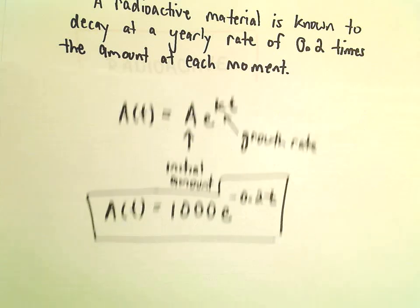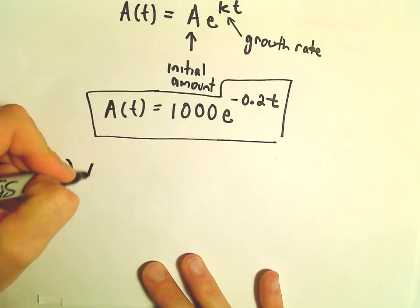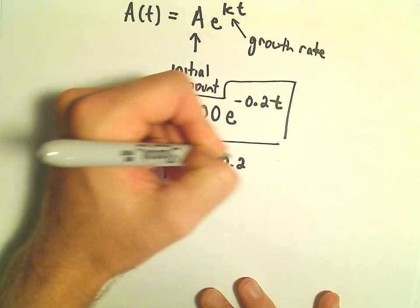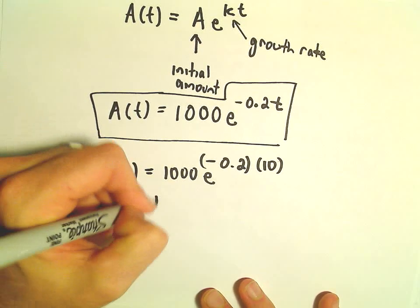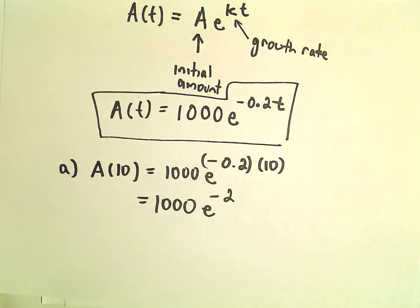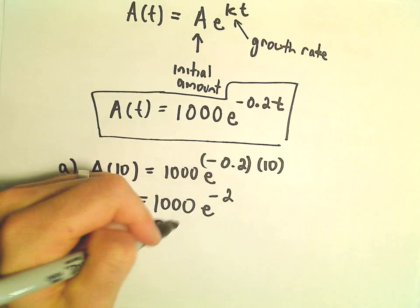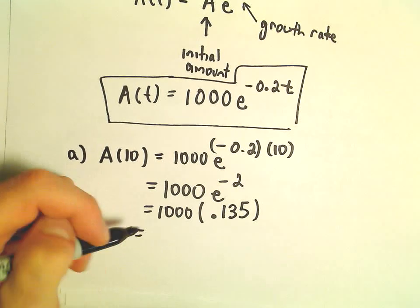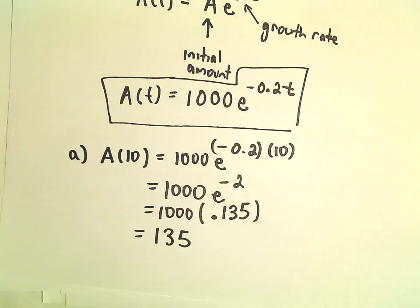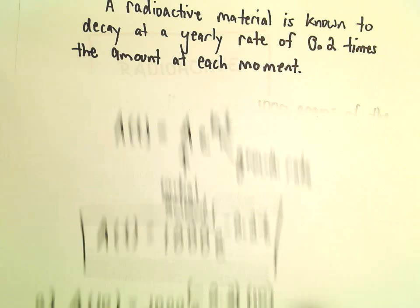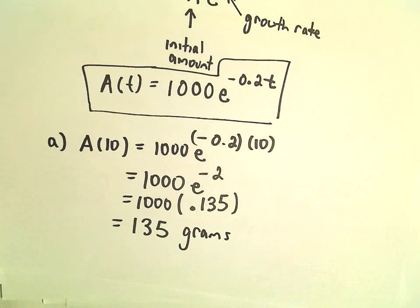In part A, we want to know how much material is there after 10 years. All we have to do is plug 10 into the formula. So we have 1,000 times e to the negative 0.2 times 10, which gives us 1,000 times e to the negative 2. Evaluating that, e to the negative 2 is roughly 0.135. Multiplying by 1,000 gives us 135, so roughly 135 grams of this material will be left after 10 years.